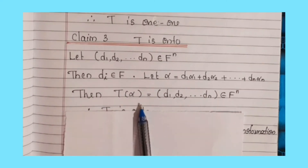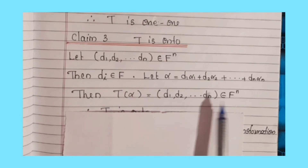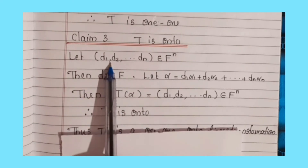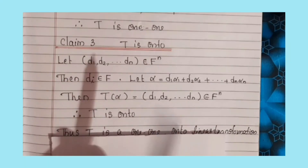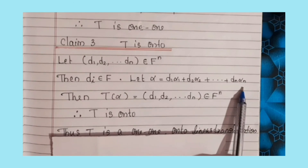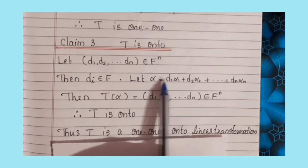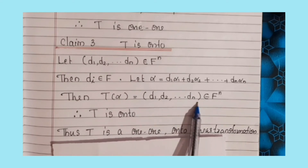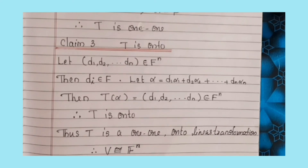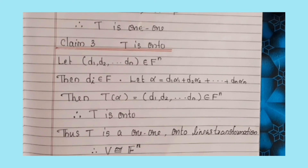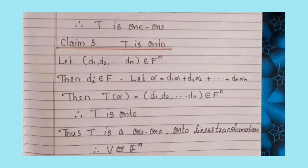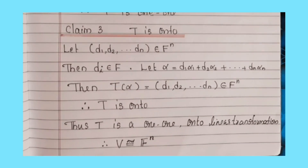Claim 3: T is onto. Let (d₁, d₂, ..., dₙ) belong to Fⁿ, where dᵢ belongs to F. Let α = d₁α₁ + d₂α₂ + ... + dₙαₙ; then T(α) = (d₁, d₂, ..., dₙ), which belongs to Fⁿ. Therefore T is onto. Since T is a linear transformation that is both one-to-one and onto, it is a bijective linear transformation, so V is isomorphic to Fⁿ.